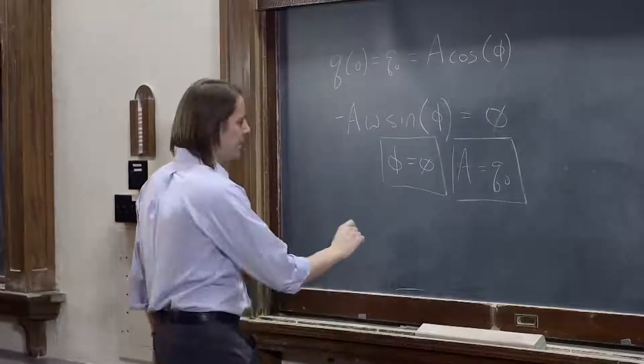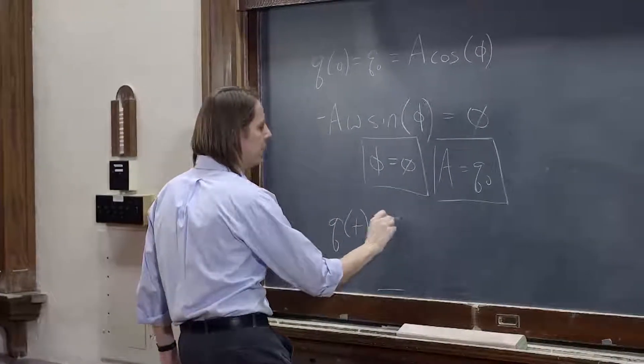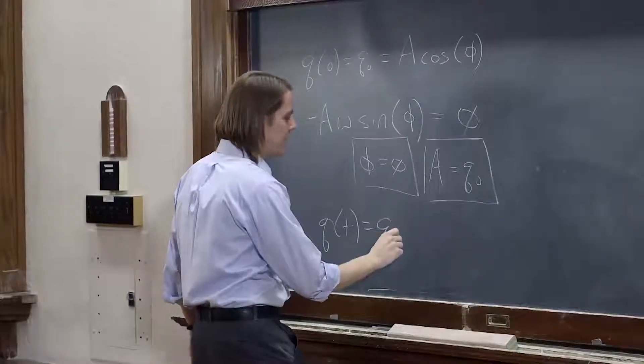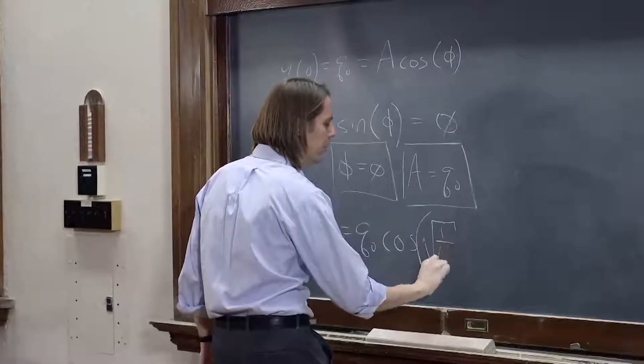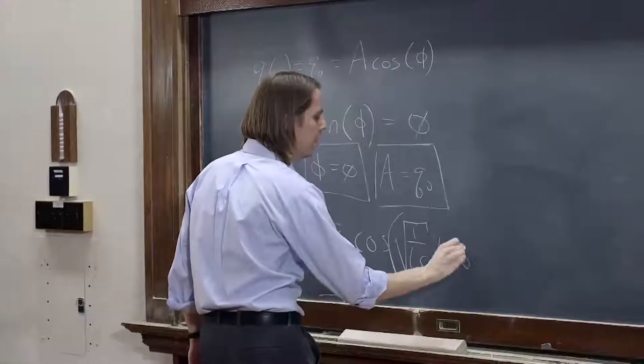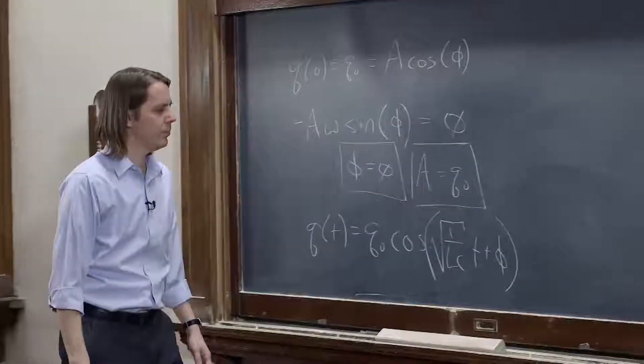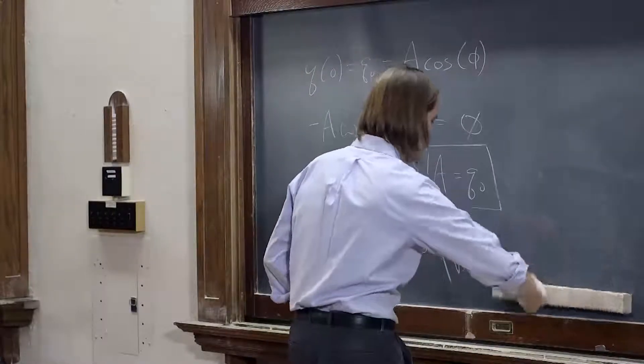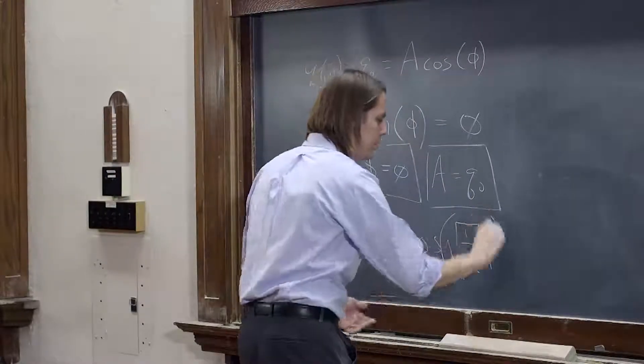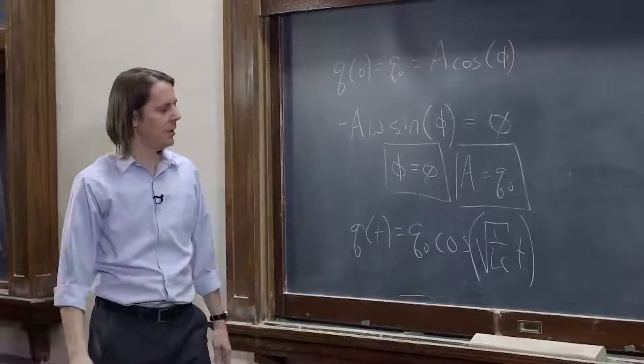So what we get then, if this guess is q of t equals q naught, in this case cosine of the square root of one over LC t plus phi, I'm sorry, plus nothing, phi is zero. So, yes, one over the square root of LC t.